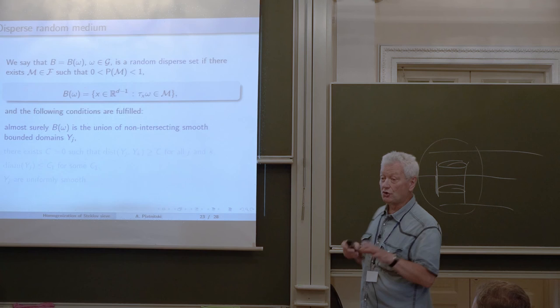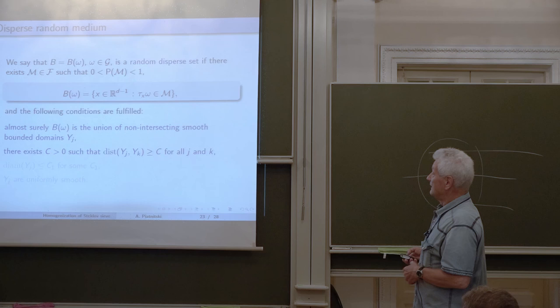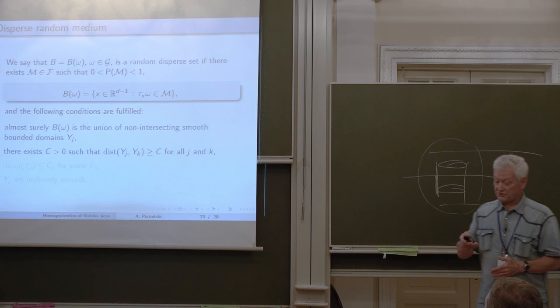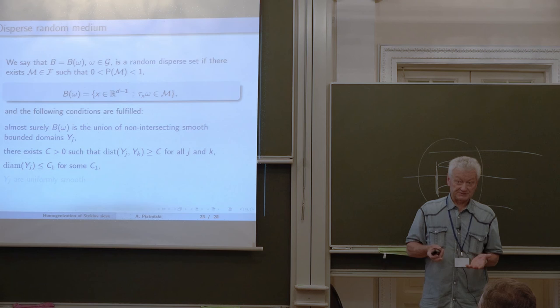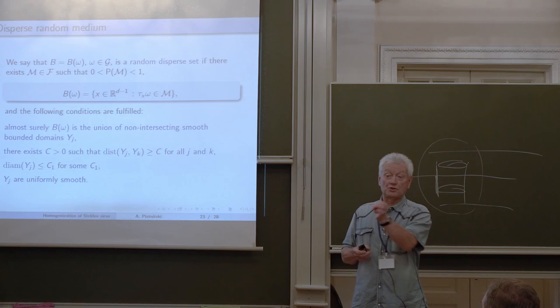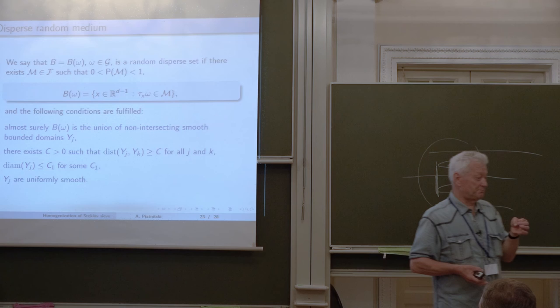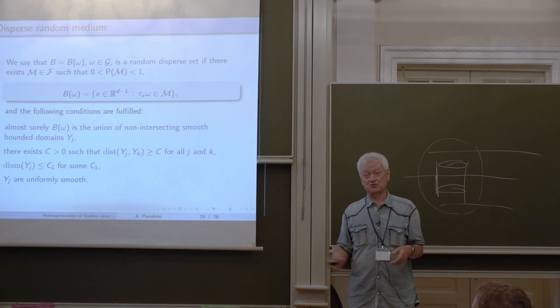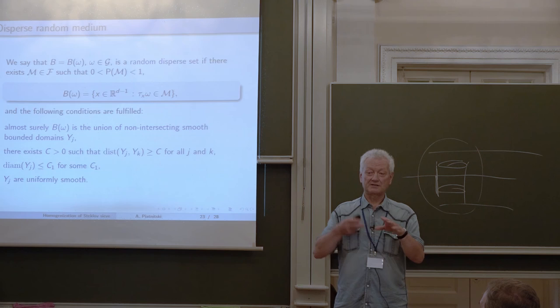We postulate additional properties: for almost all omega, this set is a union of non-intersecting bounded open sets; the distance between any two such domains is greater than some deterministic positive constant (they are well separated); the diameter is bounded by some deterministic constant; and they are uniformly smooth. There are many natural examples of such geometry in the literature on stochastic geometry, typically constructed via Bernoulli percolation models or Poisson random processes.